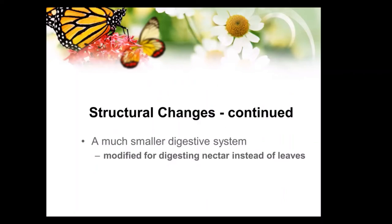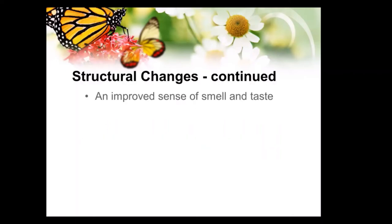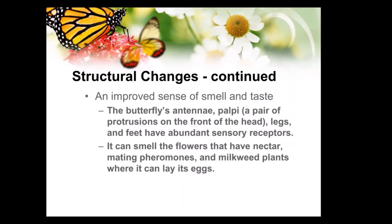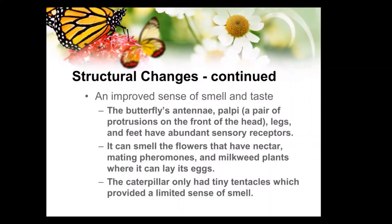Another thing is the digestive system. When it was eating plant material, it was eating its own weight every day. Now it had to be totally redesigned for digesting nectar instead of leaves. The sensor information is totally upgraded — the difference between a Model T and an airplane, which has much better sensors needed for traveling at a higher speed and in a different mode. It can sense food, it can smell, it can find things — the flowers where there is nectar, other butterflies, and the milkweed plants — whereas the caterpillar only had tiny tentacles with a very limited sense of smell.